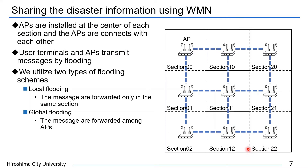Next, I'll explain about the wireless mesh network system. User terminals share the information to select an evacuation route using wireless mesh networks. As shown in this figure, APs are installed at the center of each section and the APs are connected with each other. User terminals and APs transmit messages including the disaster information by flooding. In case that many terminals transmit messages by flooding at the same time, packet losses occur frequently and the transmission rate might become much lower. Therefore, we utilize two types of flooding schemes: local flooding and global flooding.